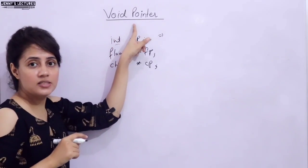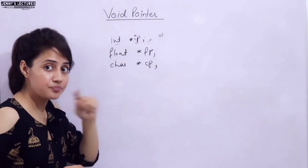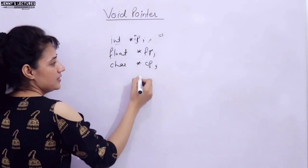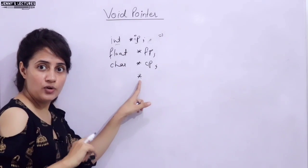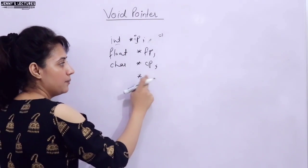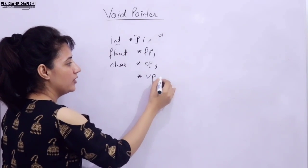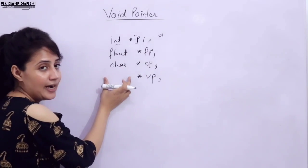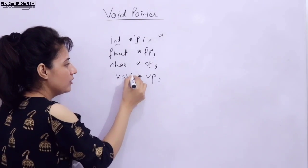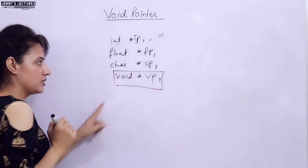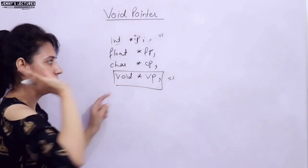But void pointer is having no associated data type. So how to declare this pointer? The syntax is the same — obviously if it is a pointer you have to use a star. Here you write the pointer name, suppose void pointer name vp. And what do you write at the place of data type? Simply write the keyword void. So this is the declaration of a void pointer.